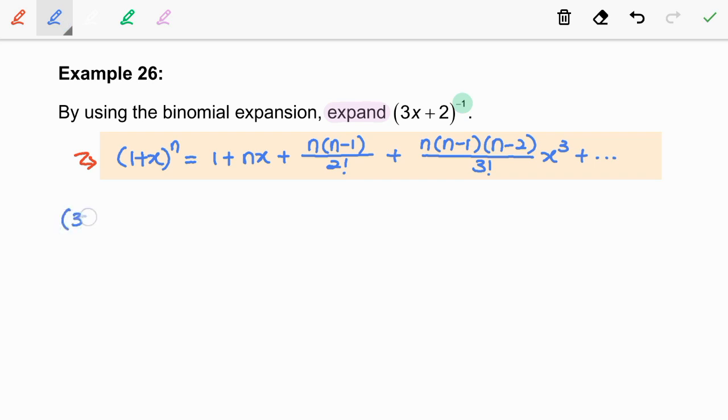Now, before we proceed to expand 3x plus 2 to the power of negative 1, we need to change the position of the terms inside the bracket. Become 2 plus 3x.